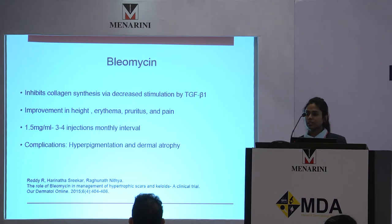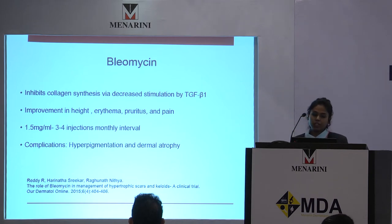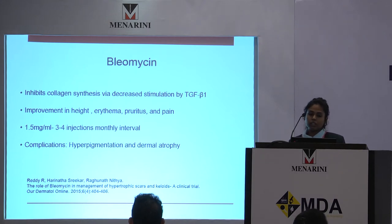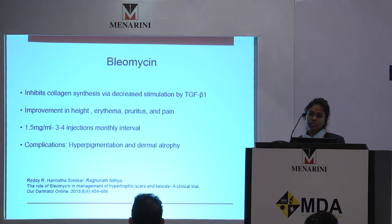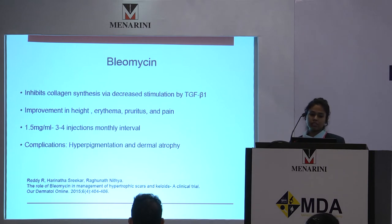Bleomycin is another anti-neoplastic drug. It inhibits collagen synthesis via decreased stimulation of transforming growth factor beta-1. It improves the height of the scar, erythema, pruritus, and pain. It is given in doses of 1.5 milligrams per ml, with 3 to 4 injections spaced at monthly intervals. Complications like hyperpigmentation have to be kept in mind. Systemic toxic effects are rare with bleomycin, and it can be used on resistant keloid scars.